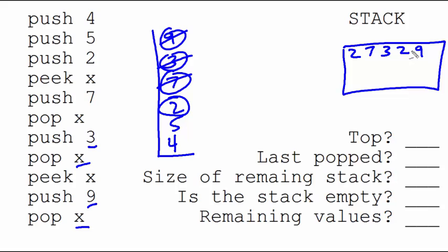So what's at the top of the stack? It's the 2. What was the last value popped? That was the 9. What's the size of the remaining stack? There's 3 elements left. Is it empty? No. What are the remaining values? 2, 5, and 4.